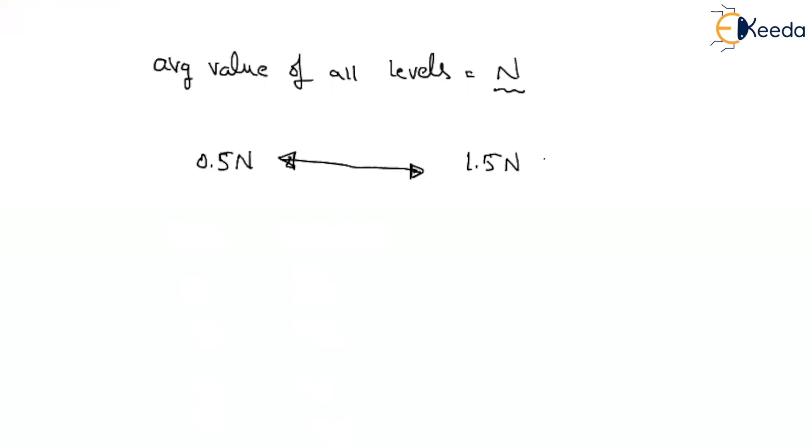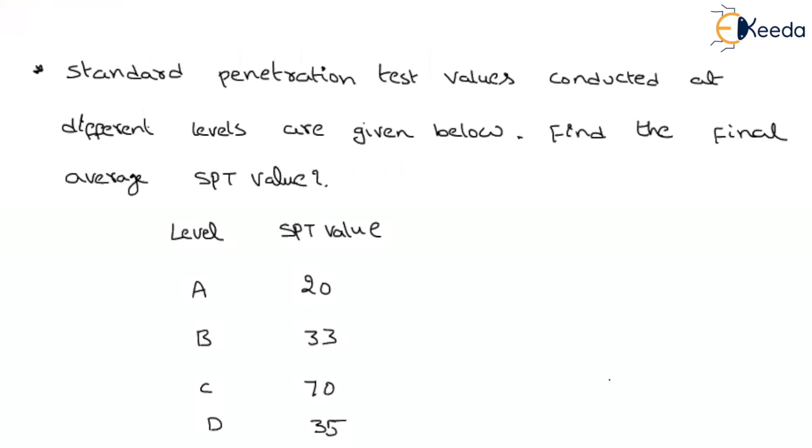If it doesn't fall within this limit, then we should not consider that value. And again, we have to find out the average. Now, let us consider the given values: NA given as 20, NB given as 33, NC given as 70, and ND given as 35.